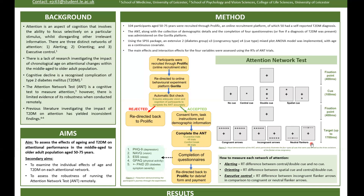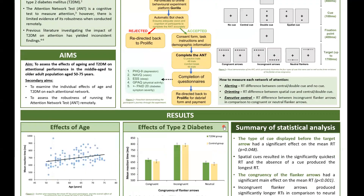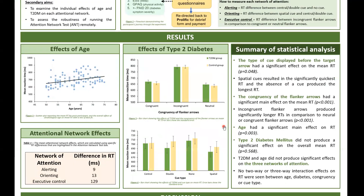So not only did we measure the effects of age and diabetes on the overall response times, but we also wanted to measure the effects of the type of cue that was used and the congruency of the flanker arrows, which would help us assess the feasibility of conducting this test online.